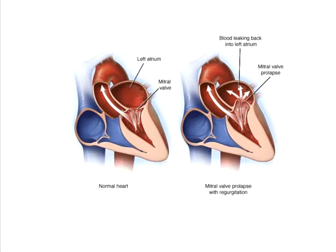As you can see, in the normal heart, when the left ventricle is contracting, the mitral valve should completely close to enable the blood to go into the aorta, and it also prevents the blood from coming into the left atrium.